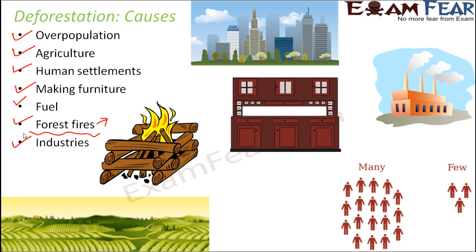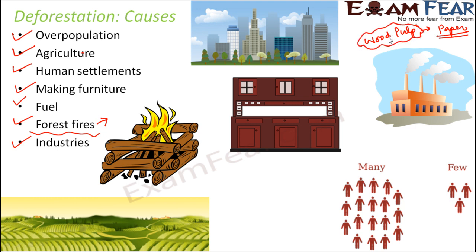The establishment of industries and factories is another cause, because these industries produce a variety of goods. For example, paper is manufactured in paper factories from wood pulp. So the factory causes pollution to the environment, and for setting it up you need space. On top of that, the raw material for manufacturing paper is wood pulp — that means you need to cut down trees to obtain it. Paper is not the only substance manufactured this way; there are a lot of substances getting manufactured in industries, and setting up these industries is often at the cost of cutting down forests.